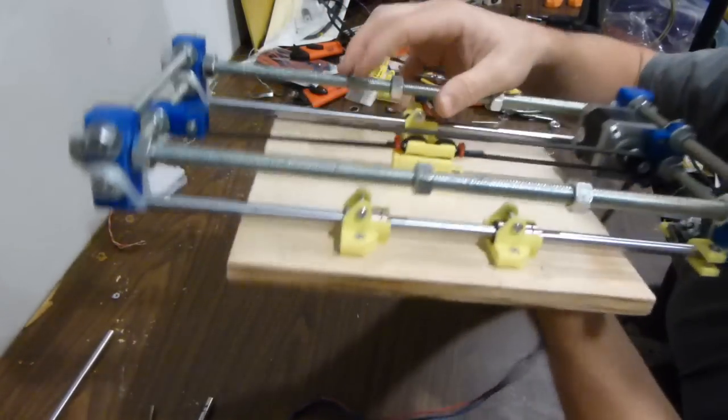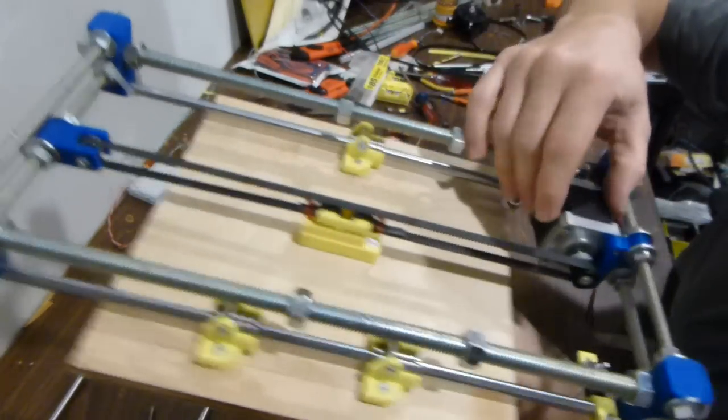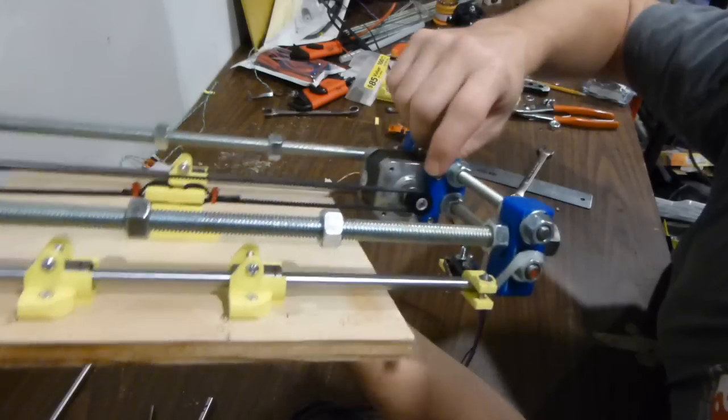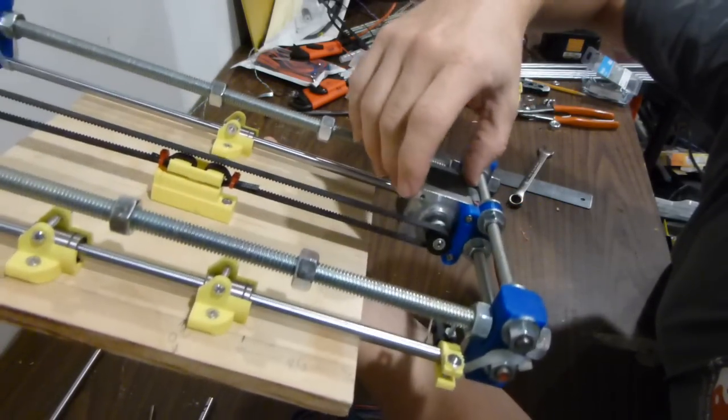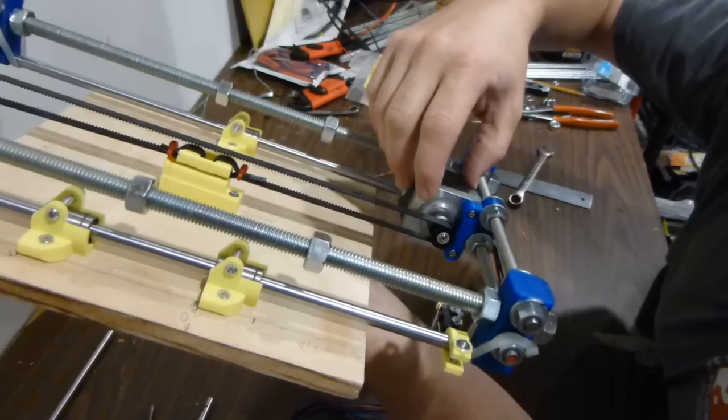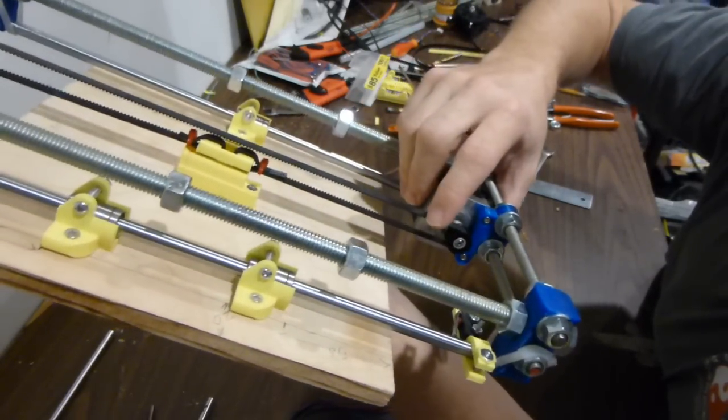On the belt holder, what you want to do is, well, I guess first you need to get the motor in there. Use a couple of M3 by 10 millimeter screws to put your motor in. And you want your pulley on the motor as well at this time.